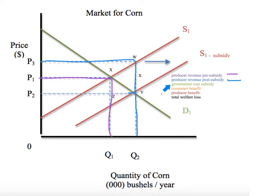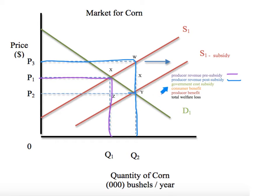The next storyline is the government cost of the subsidy, because the government has to come up with this cash and needs to know how much to fork out. Logically, for every bushel of corn at quantity Q2, they're going to have to give a dollar. The distance from Y to W is a dollar — that's the vertical shift of the supply curve as a result of the subsidy. So the portion of producer revenue that the government is paying is squared off between those points — P2, P3, W — that's the government cost of the subsidy. This entire box from Q2 up and across is the total cost of the subsidy to the government.